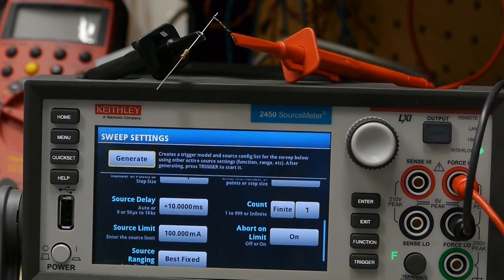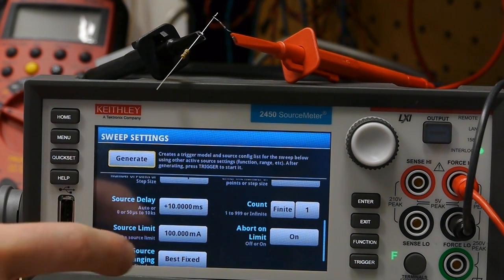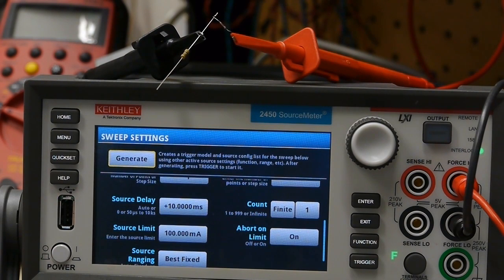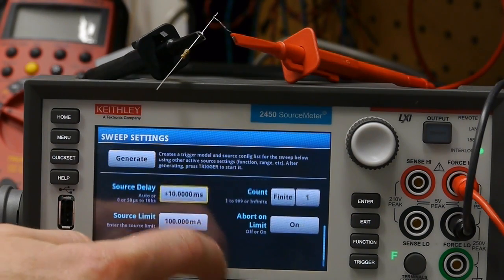I also characterized these tiny light bulbs to better understand how I could build a circuit around them. One cool thing we can do with this power supply is sweep the voltage while measuring the current to get a really good understanding of what this light bulb is going to do.